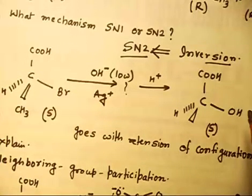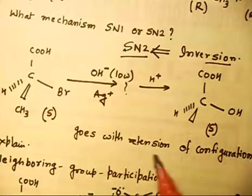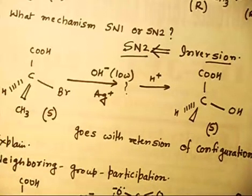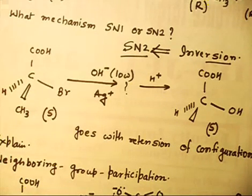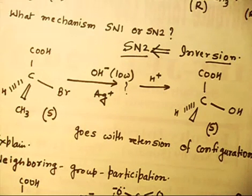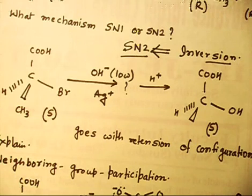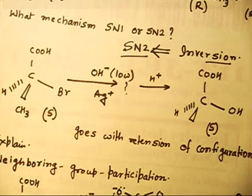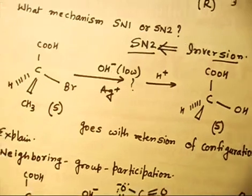This starting compound is S, and the product goes with retention of configuration. Now if OH⁻ concentration is low and I treat with Ag⁺ — note that earlier OH⁻ concentration was very high — in this case, if you treat with OH⁻ and Ag⁺, the configuration retains. This reaction goes with retention of configuration. You have to explain why this is happening with retention of configuration.